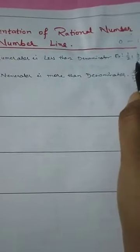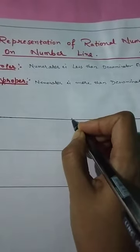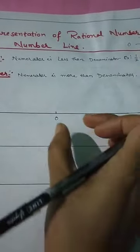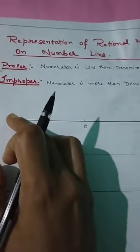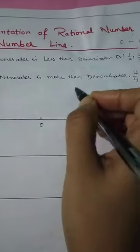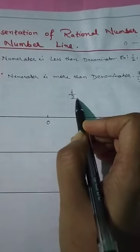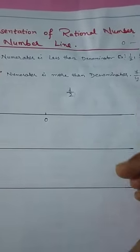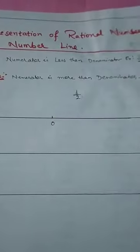Whenever we have to plot a proper rational number, we will draw a number line. The middle point is 0. After this you can plot 1, 2, 3, 4, and on the other side minus 1, minus 2, minus 3 according to your need. Suppose I want to plot 1/2 on the number line — you have to look at the denominator. Denominator is 2, so we will divide the segment from 0 to 1 into 2 equal parts.